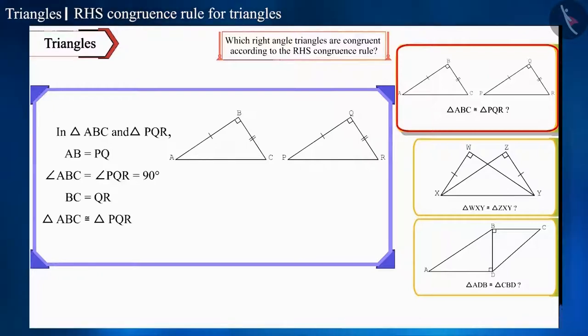Therefore, as per the given information, the two triangles are not congruent by the RHS congruence rule, but they are congruent by the side angle side or SAS congruence rule.